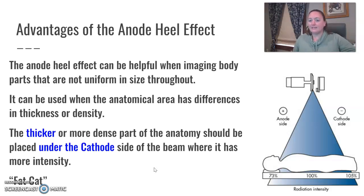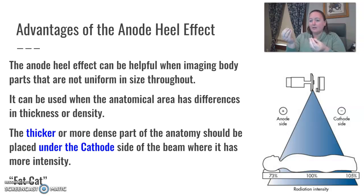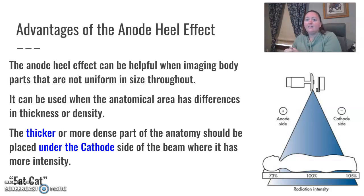When you have a part that's not the same thickness from beginning to end — looking at the abdomen as a whole — the upper portion versus the pelvis side: what side is thicker or more dense? You put that part under the cathode side of the beam. That is what we use as the fat cap concept. The fatter or thicker side goes under the cathode side of the beam. I have a couple examples here.